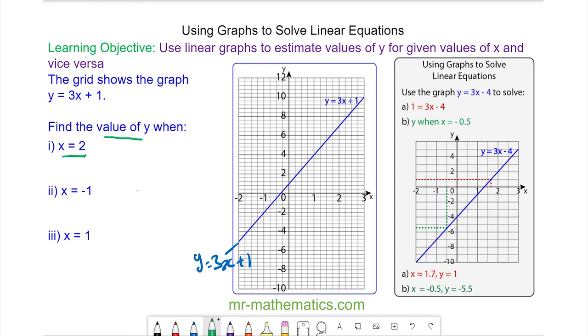To do this we draw a vertical line at x equals 2 to a point where it crosses the blue line and then we draw a horizontal line to the y-axis and you can see that when x equals 2 y is equal to 7.